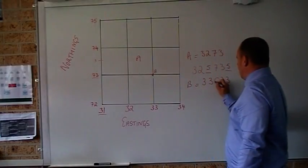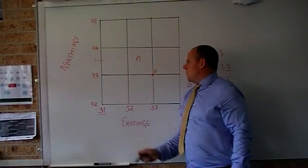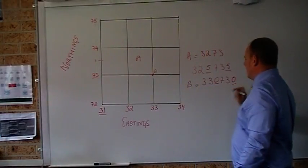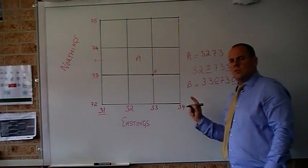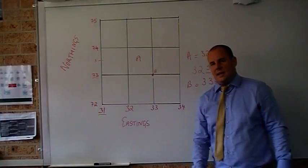It'll be 33, 0, 73, 0. You don't have to underline them. I'm just doing that to show you where I'm getting my extra easting and northing.